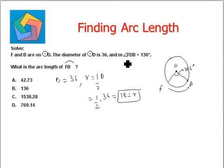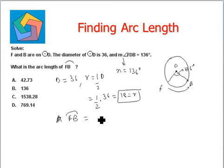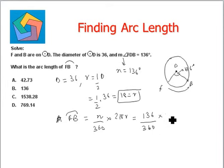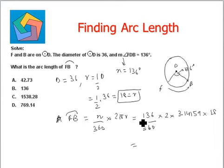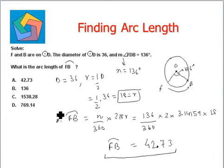N is given as 136 degrees. The arc length FB equals N divided by 360, times 2 times πR. Plugging in the values: N is 136 divided by 360, times 2 times 3.14159, times R which is 18. Calculating on the calculator: 136 times 2 times 3.14159 times 18 divided by 360 equals 42.73. This is our arc length FB. The final answer can be seen in option A.